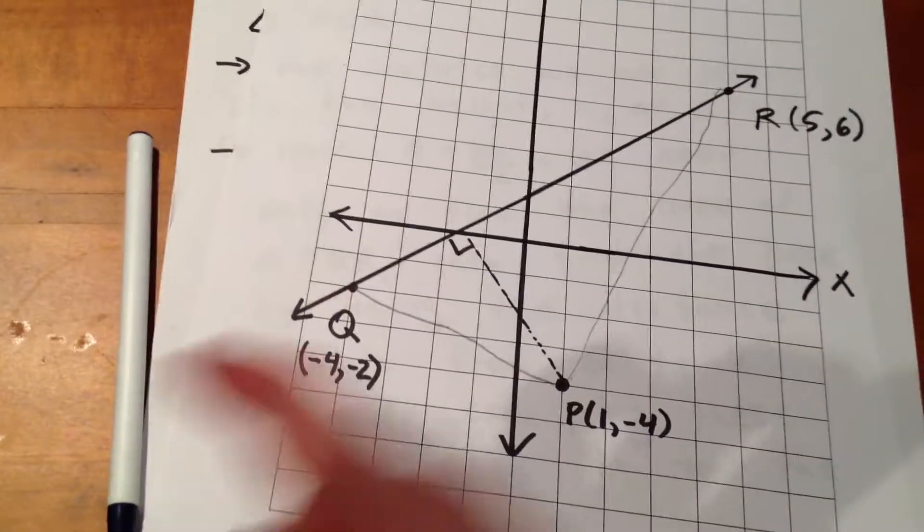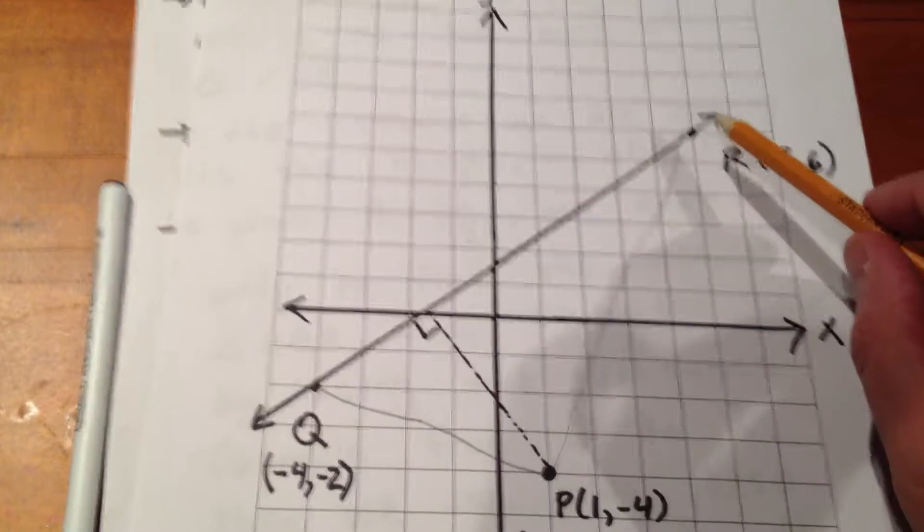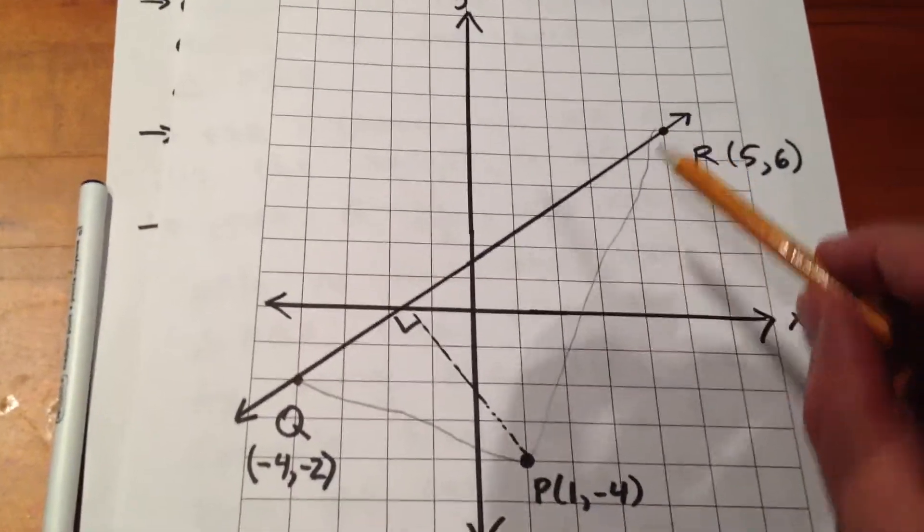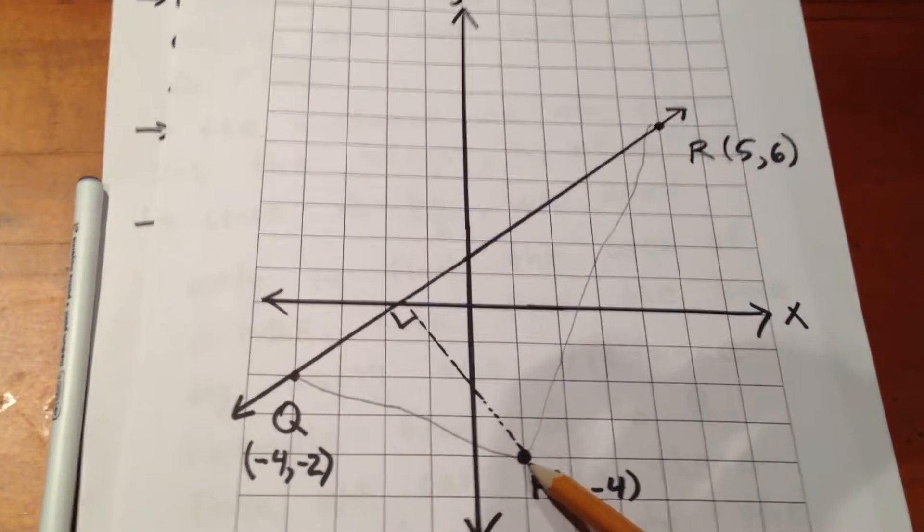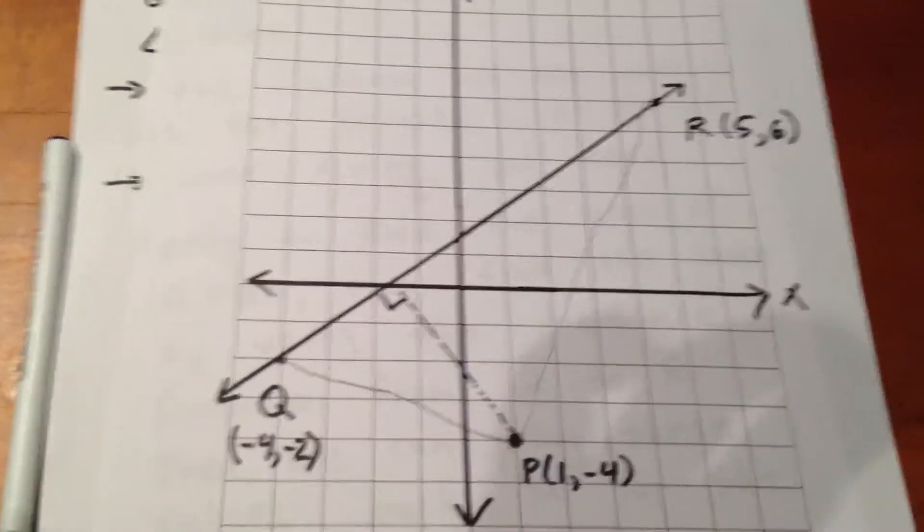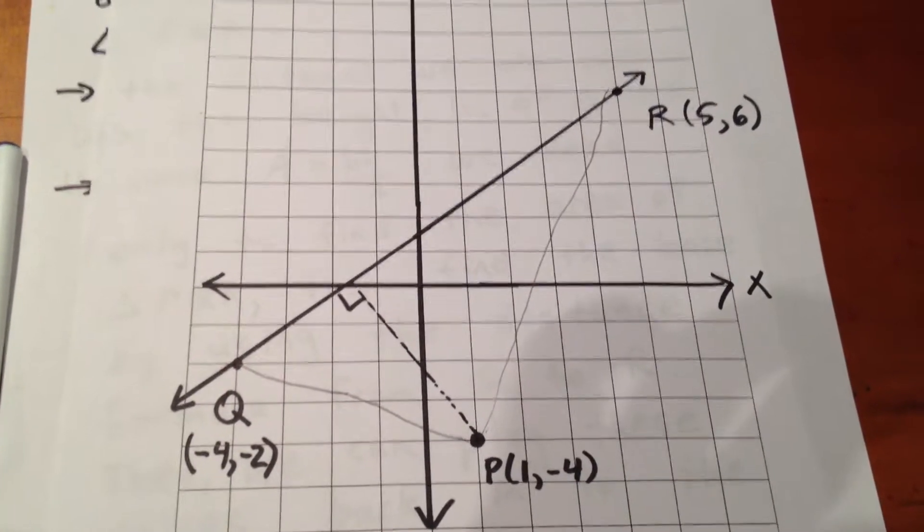Then we're going to remember, we're going to realize that the distance from Q to R is like the base of the triangle. And the distance from the point P to the line is like the height of the triangle. And we know that area equals base times height over 2.